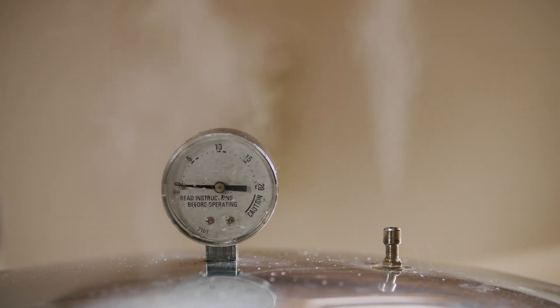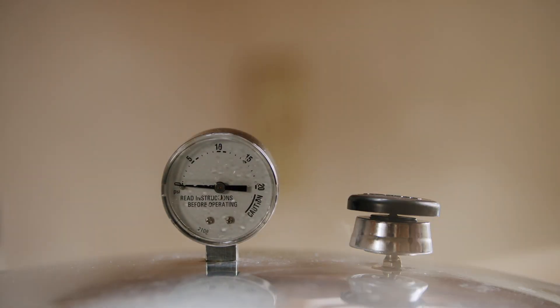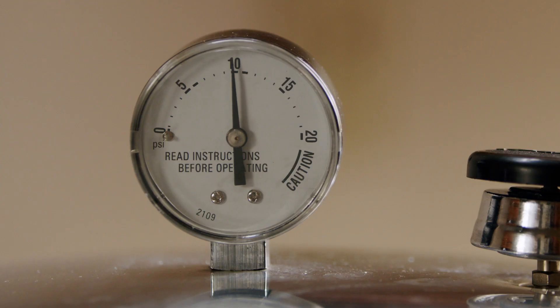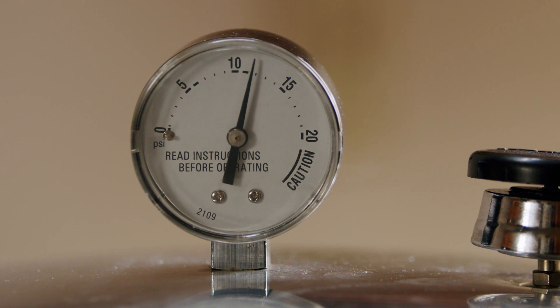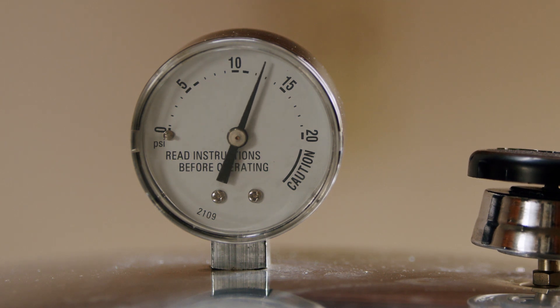Next, pressurize the canner by placing the weight on the vent port. As the canner pressurizes, you will see the needle increase on the dial gauge. Monitor the pressurizing so once it reaches the recommended pressure, you are ready to process.